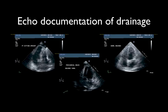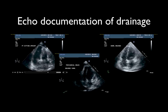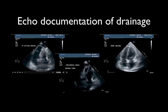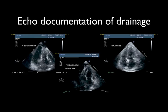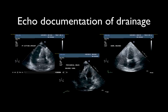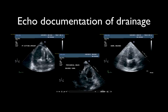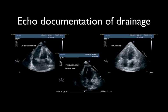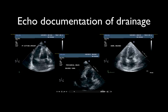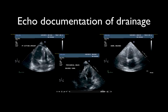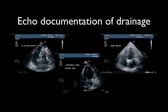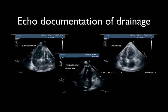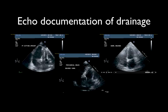Here is the progressive documentation of improvement. Initially the right ventricle is almost squashed tightly shut with the patient sitting upright. Once 180 mils of effusion have been drained, the right ventricle is starting to appear as a small slit-like structure, and finally when 600 mils of fluid have been removed, the right ventricle is looking much more normal.